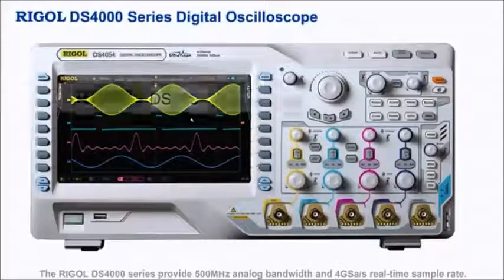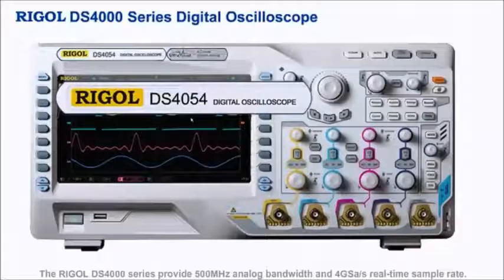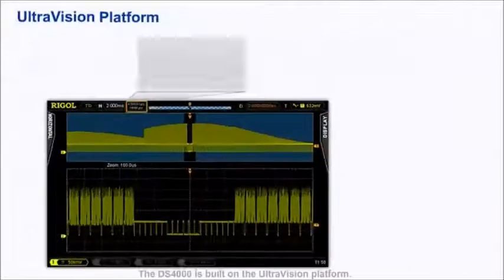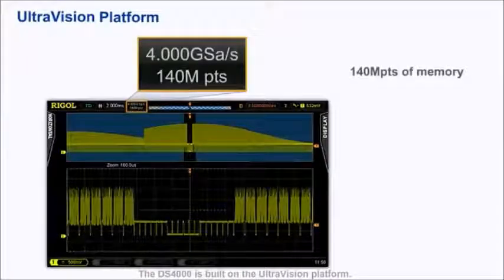The Rigol DS4000 series provides 500 MHz analog bandwidth and 4 giga samples per second real-time sample rate. The DS4000 is built on the UltraVision platform.